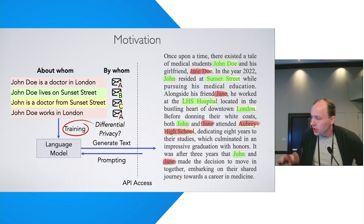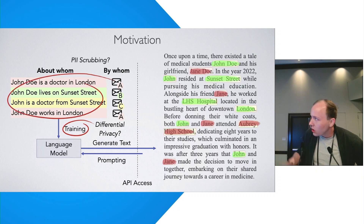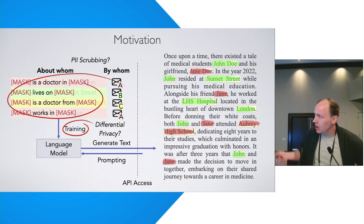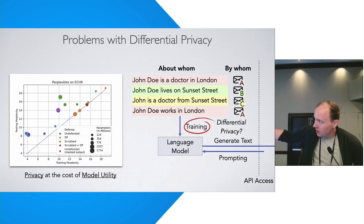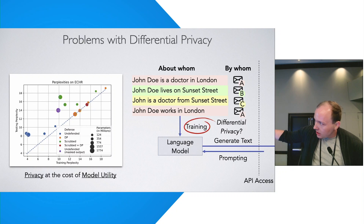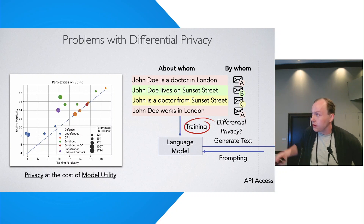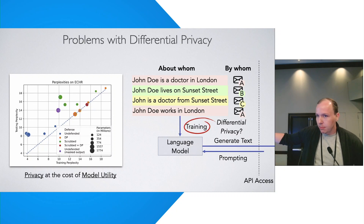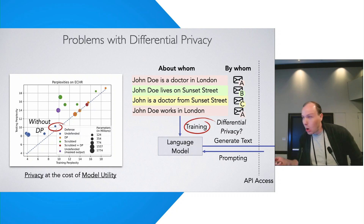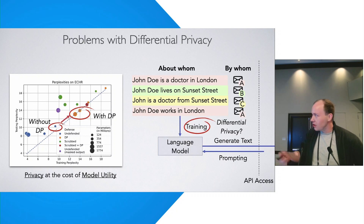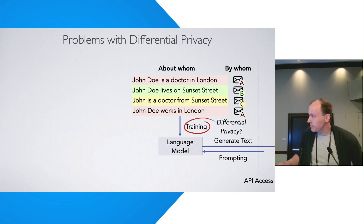So what can the defender do? They can do two things: either change their training algorithm — for example by using differential privacy — or change the training data via data curation and PII scrubbing. With differential privacy, we can look at a perplexity graph measuring model quality. Individual data points represent different training configurations, and you want low perplexity — ideally in the bottom left corner. A model trained without DP that is very small is much better than a large model trained with DP, so there is a utility cost.